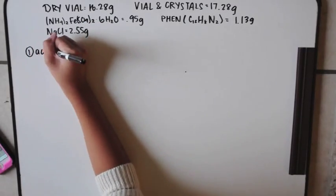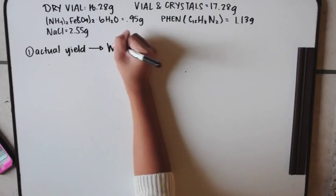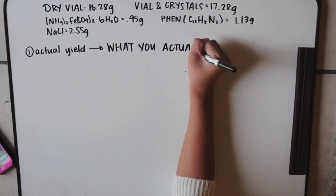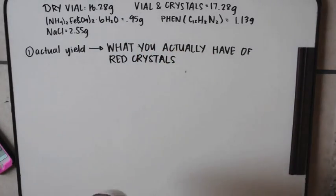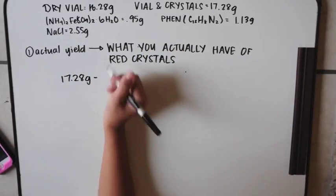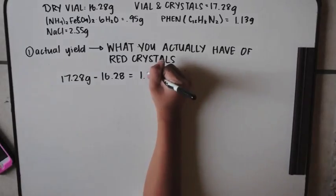Number one is asking for the actual yield, which is what you actually have of red crystals, what you recovered from your last lab. That is your vial and crystals minus your dry vial, which would be about one gram for me.